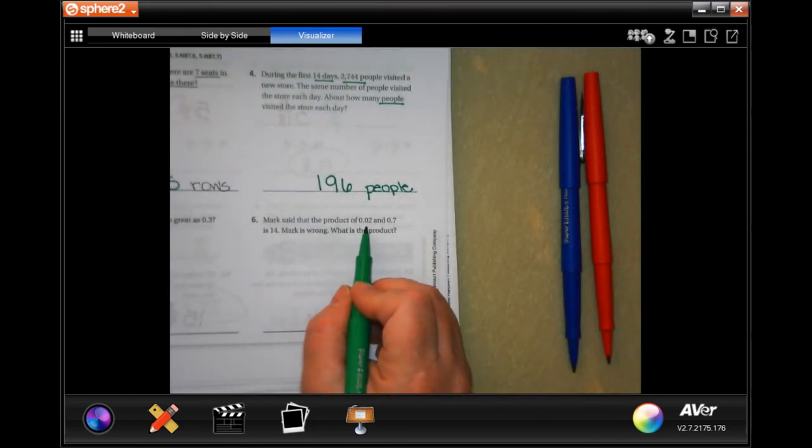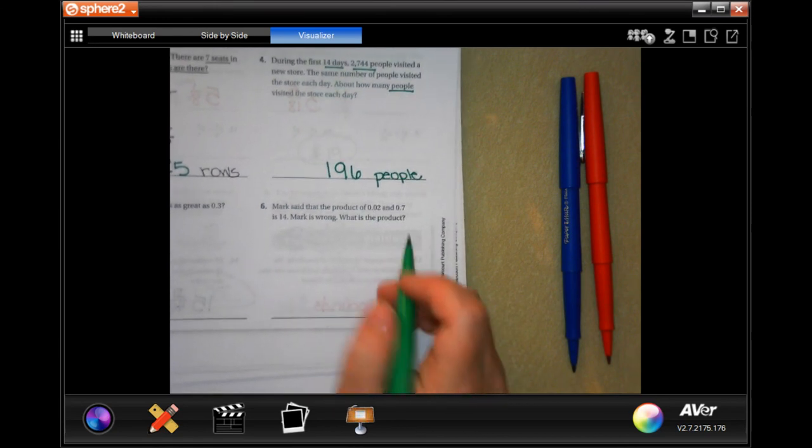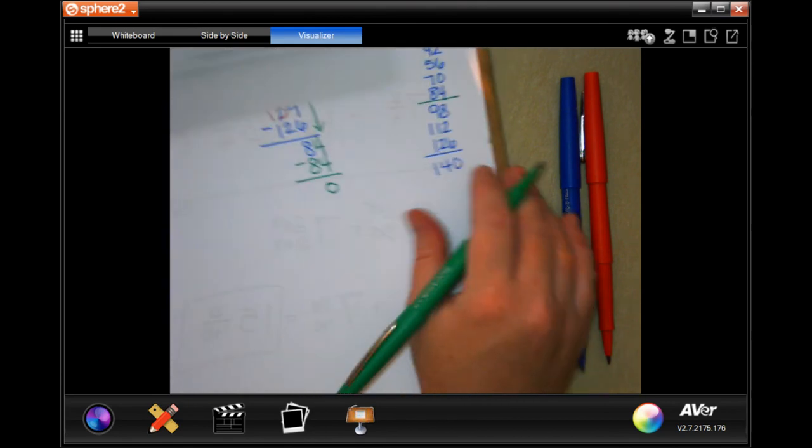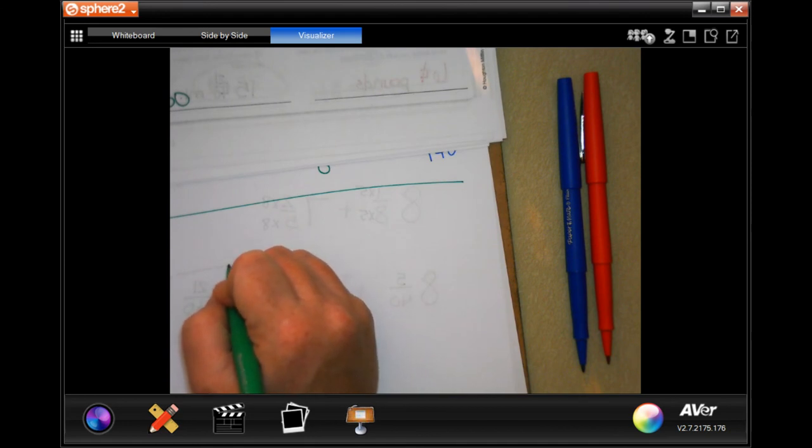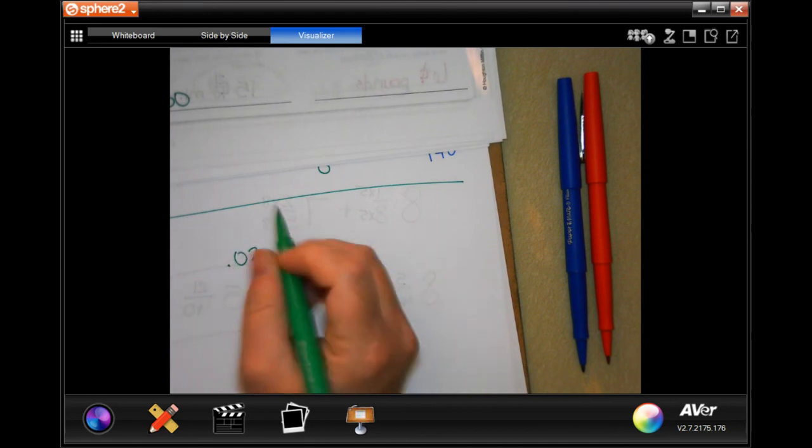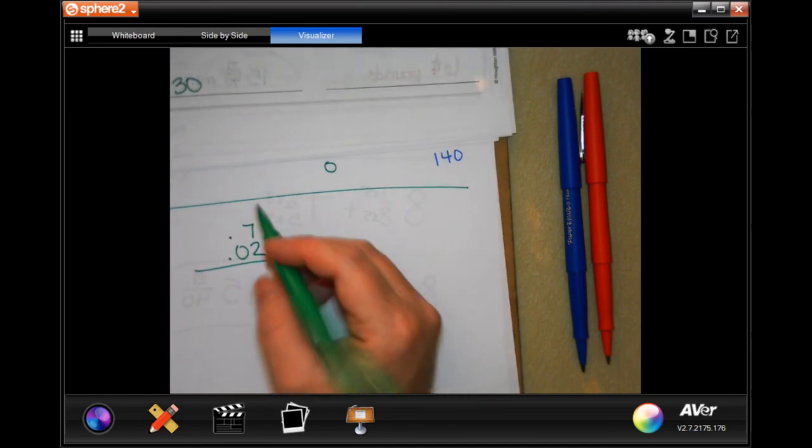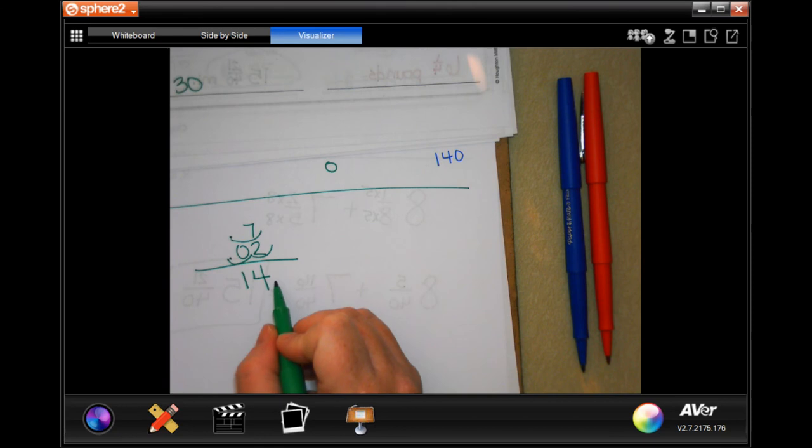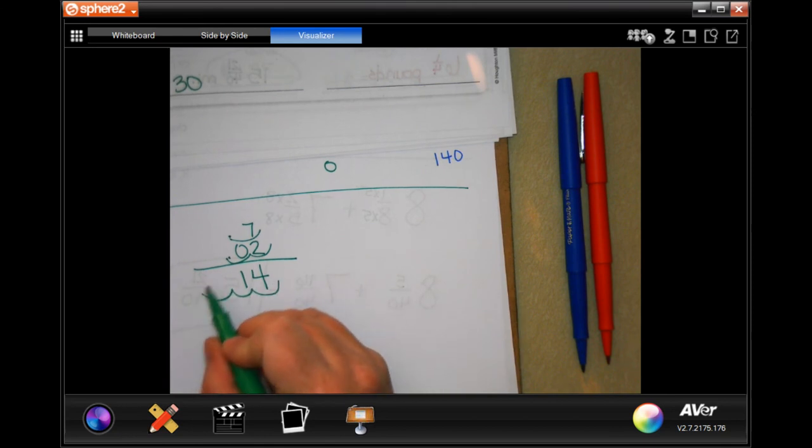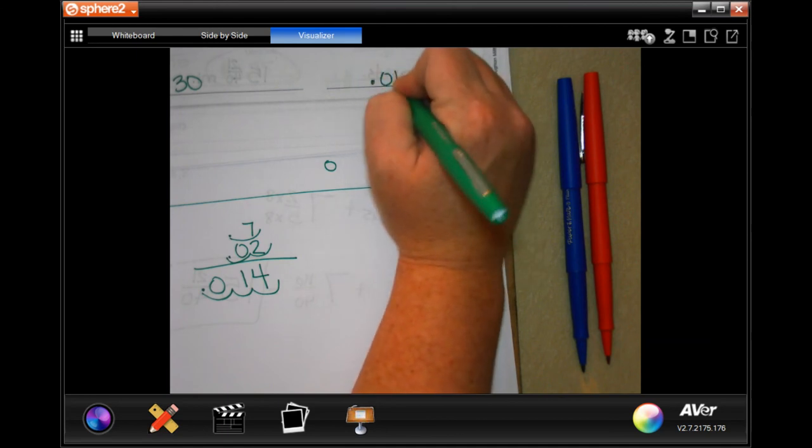Mark said that the product of 0.02 and 0.7 is 14. Mark is wrong. What is the product? So I'm going to come over here, draw a line, and do 0.02 and 0.7, and I'm going to multiply them. So 2 times 7 is 14. But I have to go in 1, 2, 3 times. 1, 2, 3 times. 0.014.